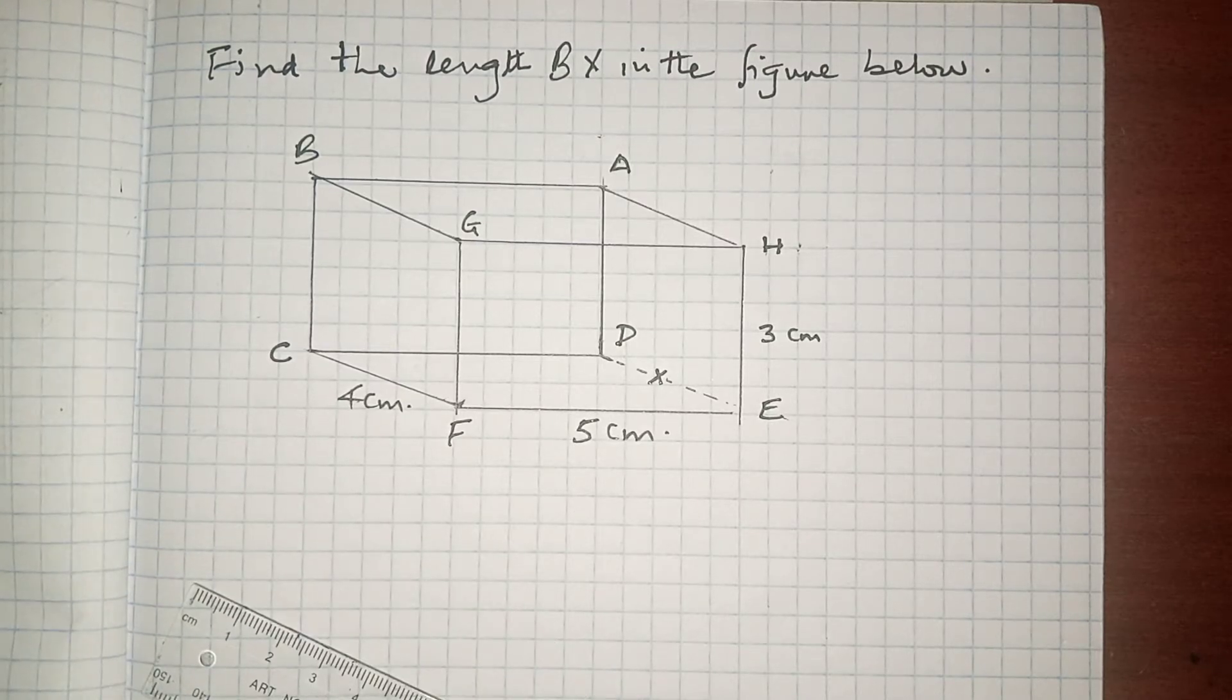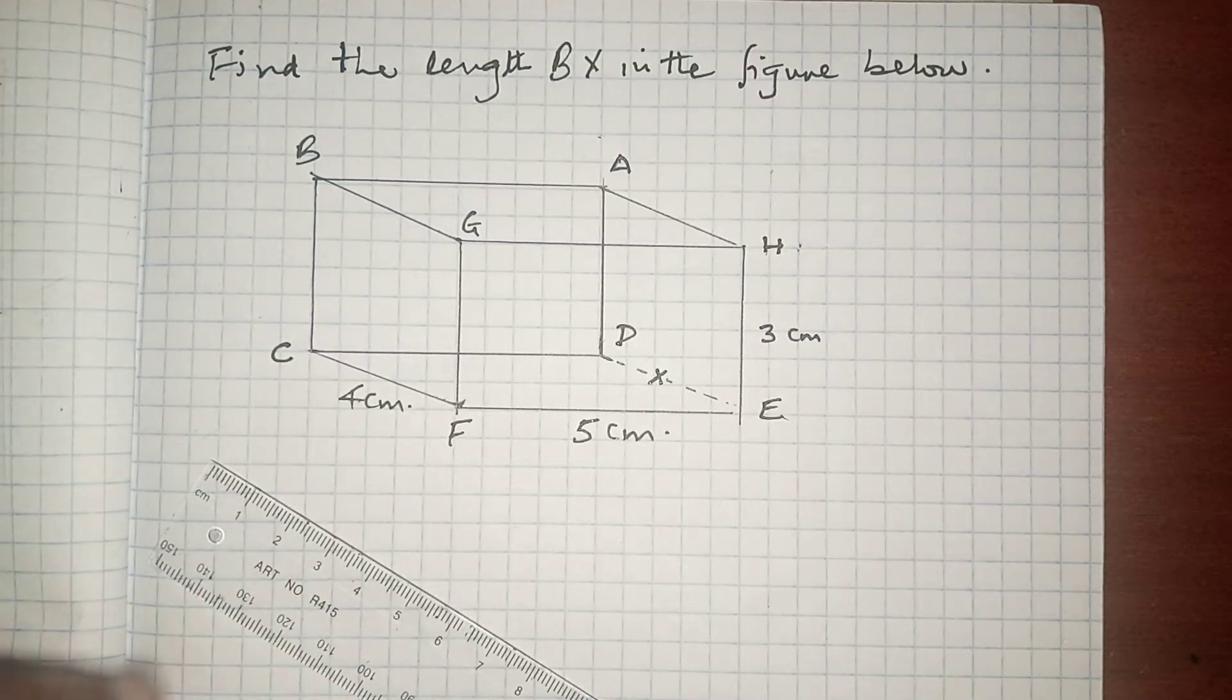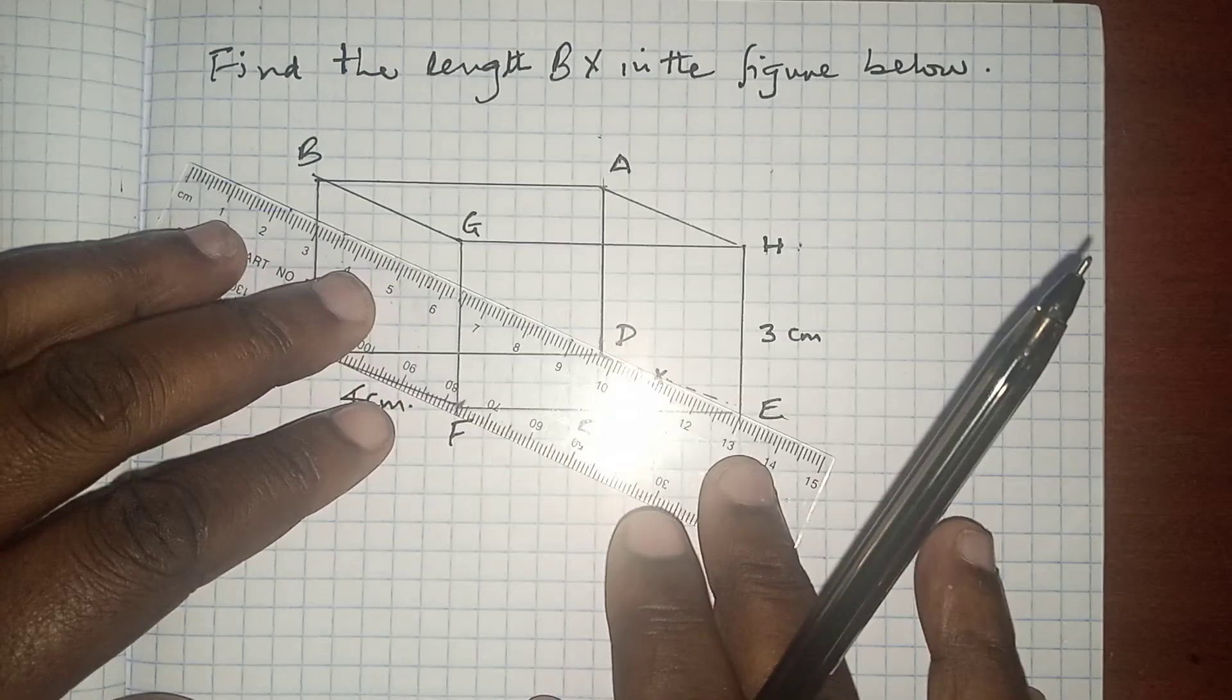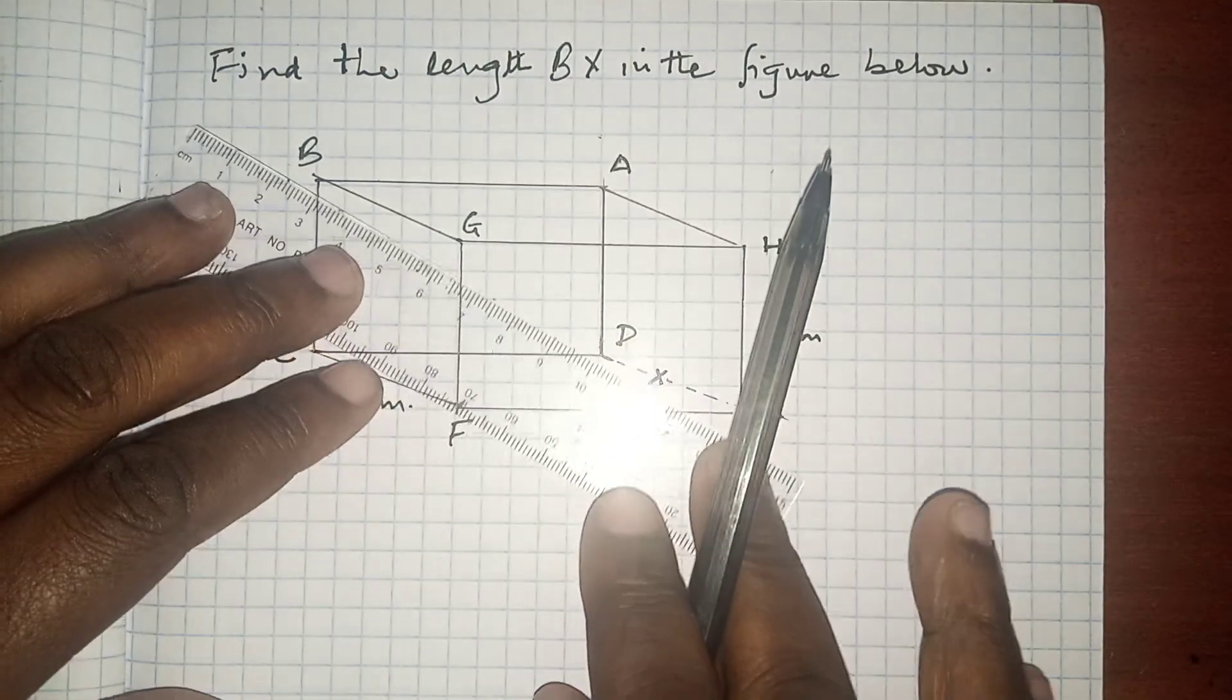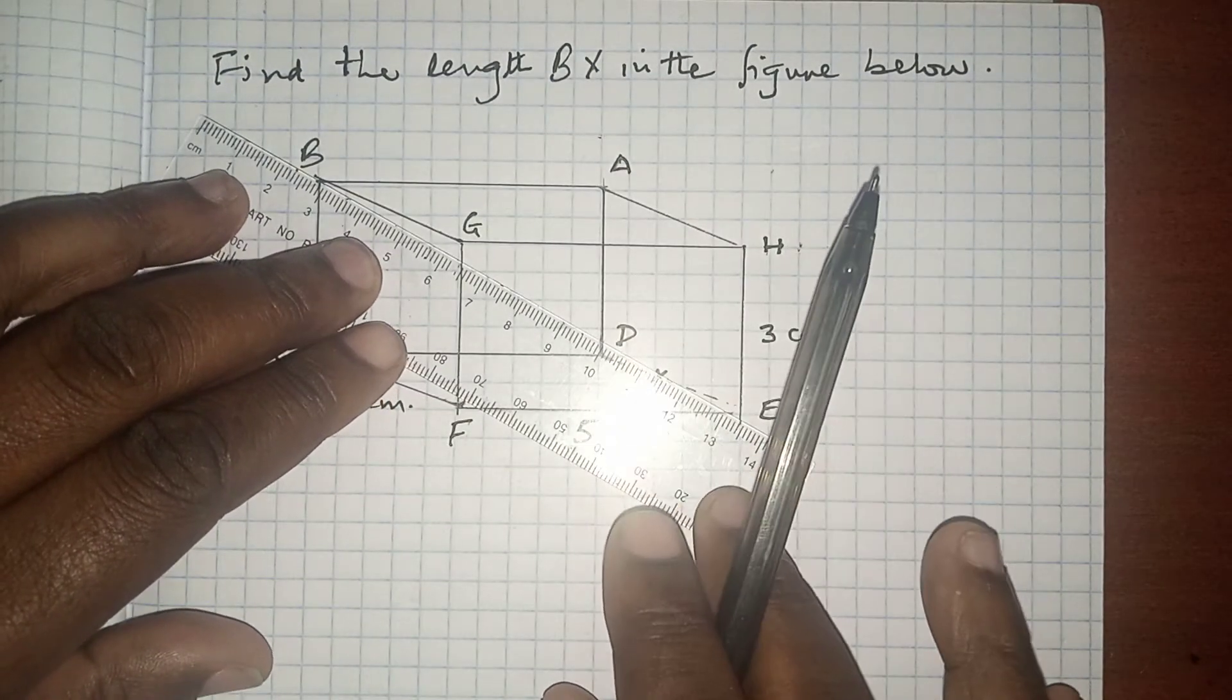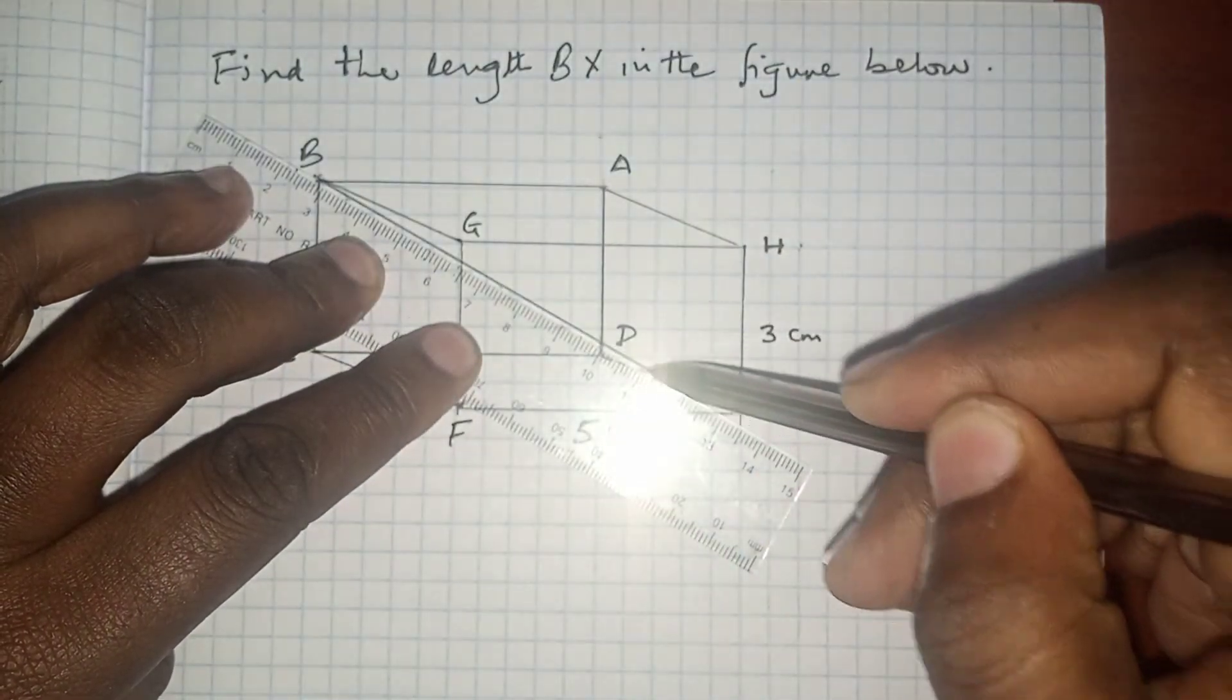In this video, I want us to respond to this question from Topic 23 of Mathematics: Find the length BX in the figure below. The first thing is to draw a straight line between B and X.